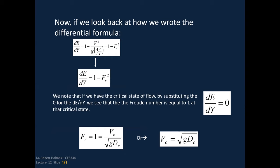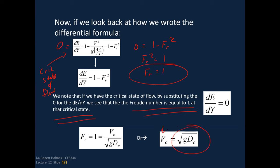When we set dE/dy equal to zero, we get the Froude number squared equals one, so the Froude number equals one at the critical state of flow. That means the critical velocity equals the square root of G times D sub c. Remember earlier — if you throw a pebble into quiescent water, the waves emanate at a velocity equal to the square root of G times the hydraulic depth D.